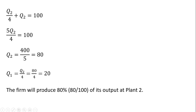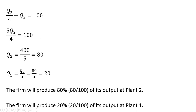Overall, the firm will produce 80% of its output — 80 divided by 100 — at plant two, and 20% of its output — 20 divided by 100 — at plant one. That's it. I hope you found this video helpful.